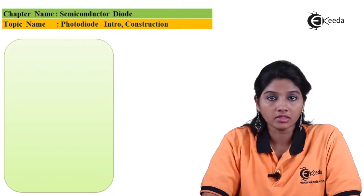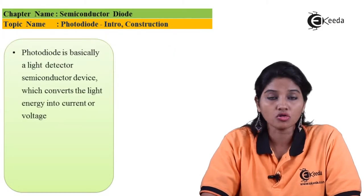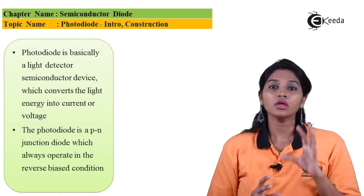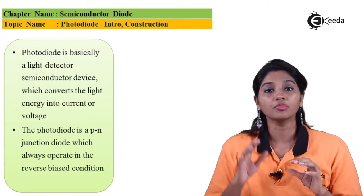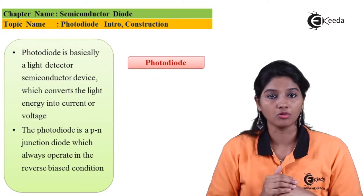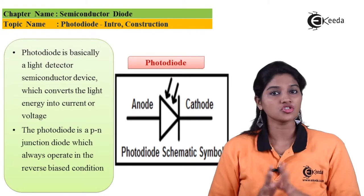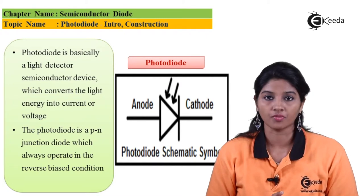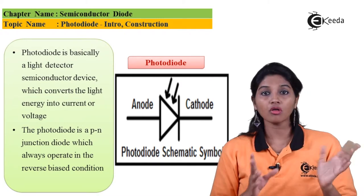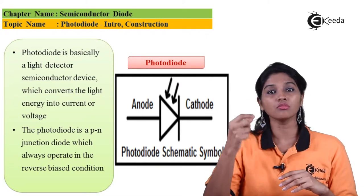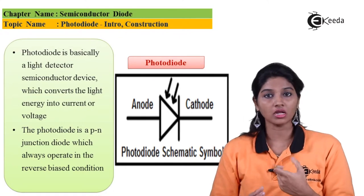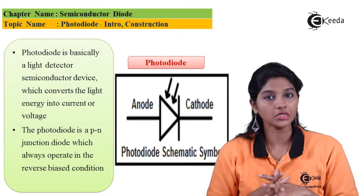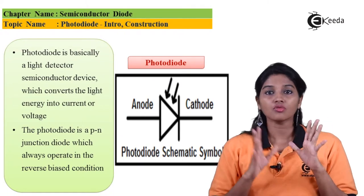A photodiode is basically a light-detecting semiconducting device, or semiconducting diode. Whenever we apply light on the photodiode it produces current or voltage at the output. The photodiode is a p-n junction diode and it is always connected in reverse bias condition. From the symbol we can also see that an arrowhead indicates the incidence of light falling on the p-n junction diode.